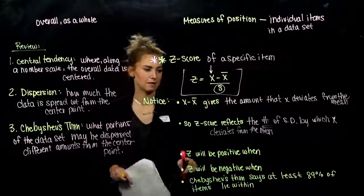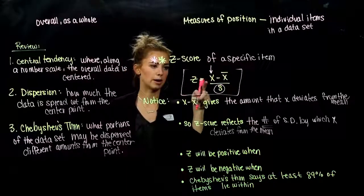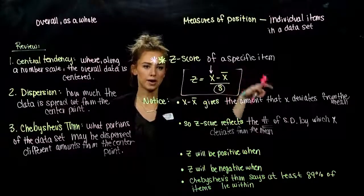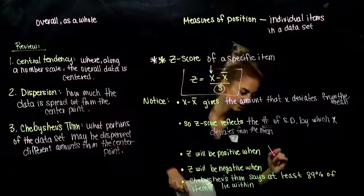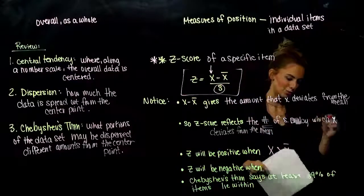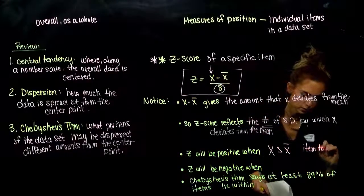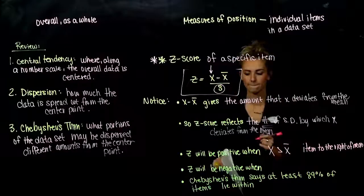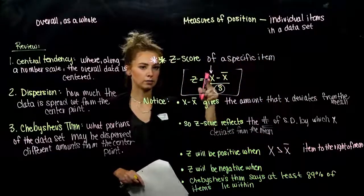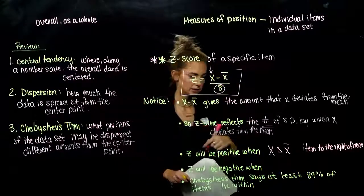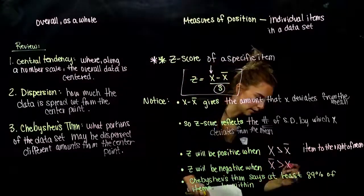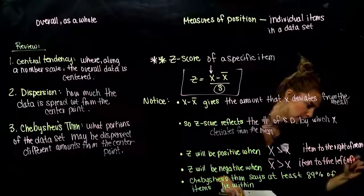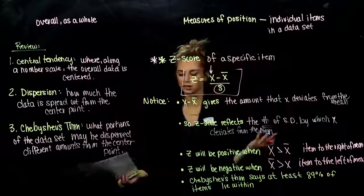When will the Z-score be positive? If the data item is bigger than the mean, Z is positive — the item is to the right of the average. So when X is larger than X-bar, the item's to the right of the mean. When is it negative? When the average is larger than the data item, so it sits on the left — when X-bar is greater than X, that tells us the item is to the left of the mean.